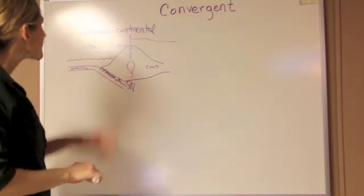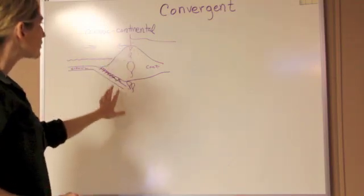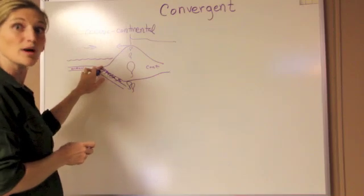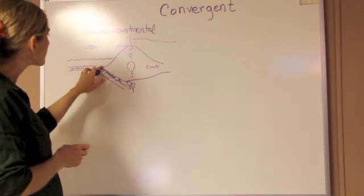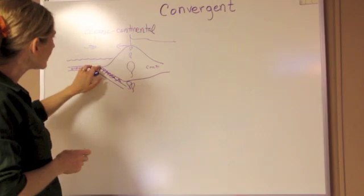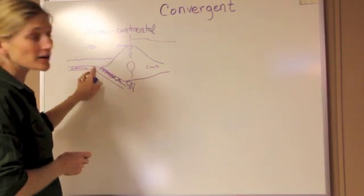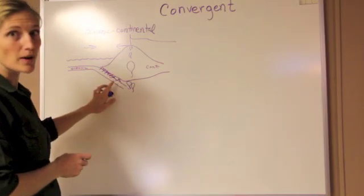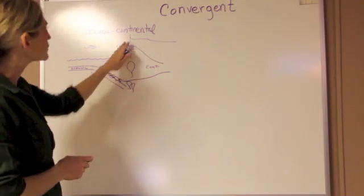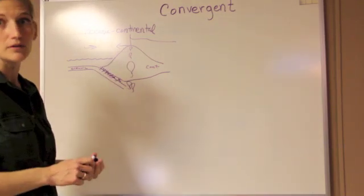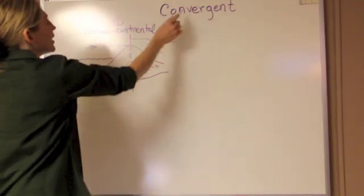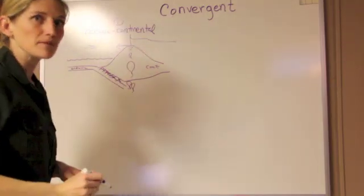At an oceanic-continental plate boundary we have a subduction zone or oceanic trench where this plate is going down. We experience a lot of earthquakes, we see mountain forming, and we also see volcanoes. That's the first of the convergent plate boundaries.